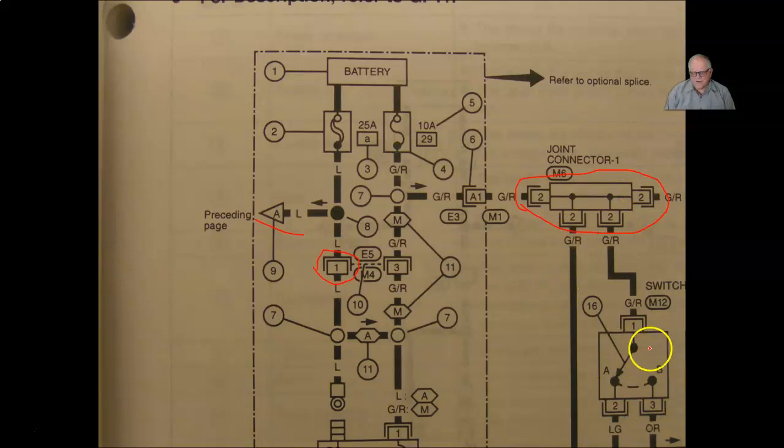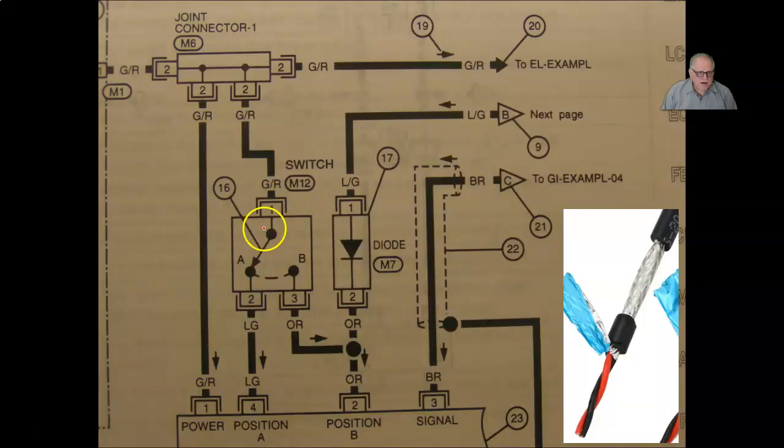And we have down here the switch. And this would be a single pole double throw. It's closed either side. It would be like the dimmer switch. And this one right here, this is actually our component.